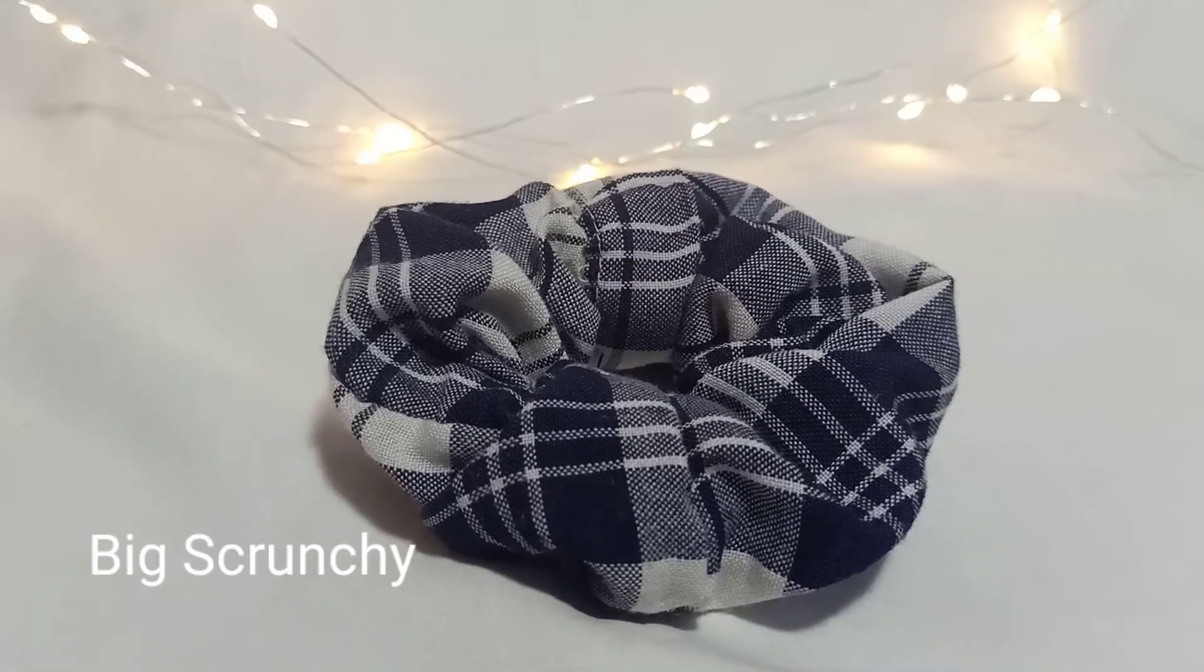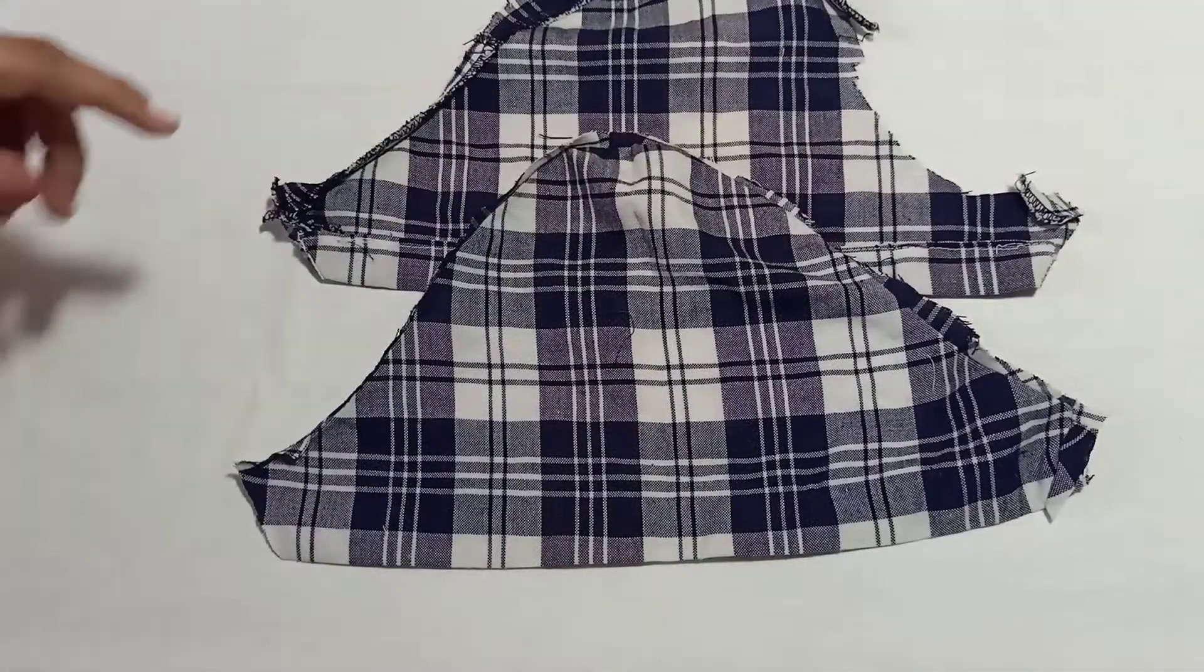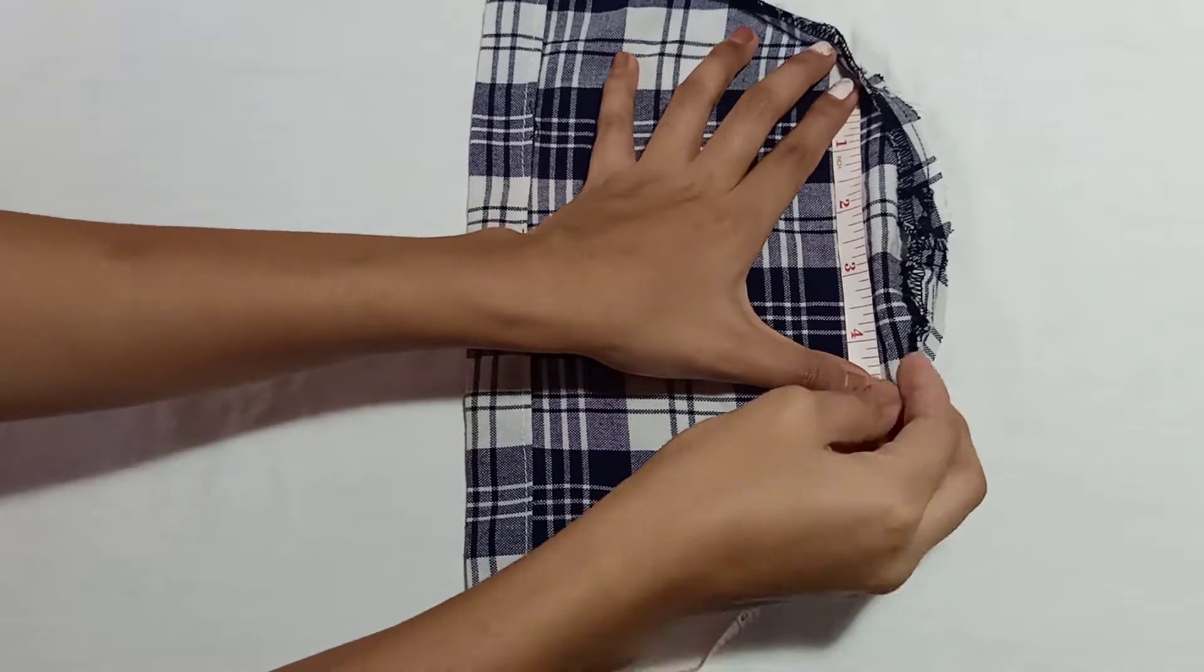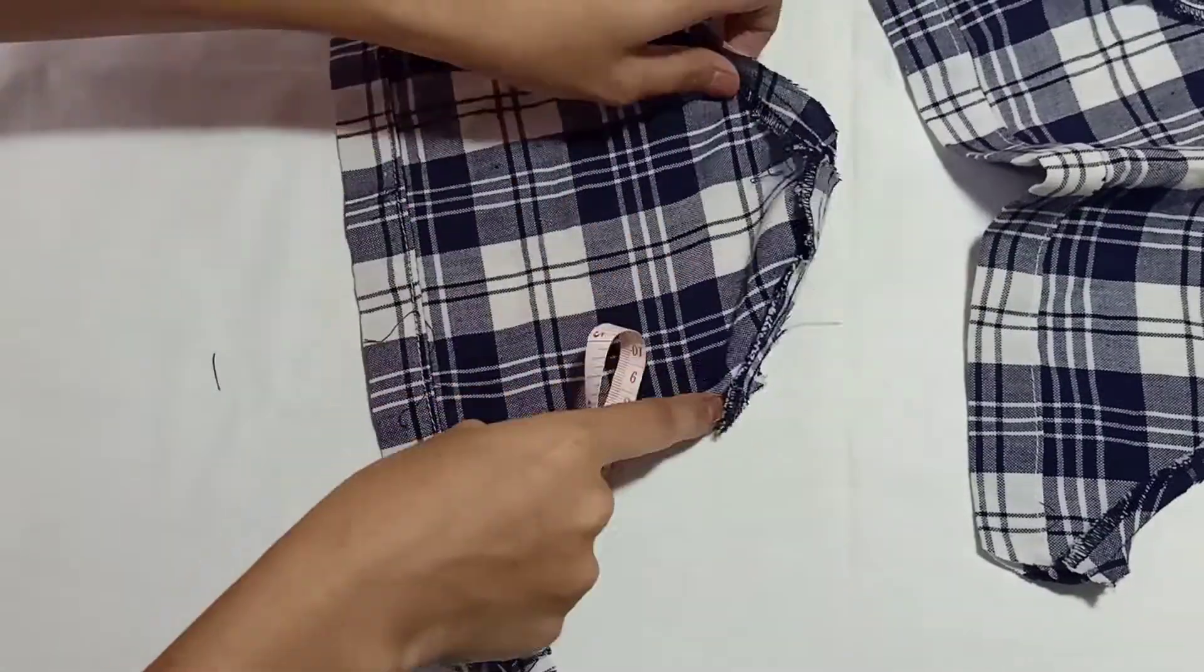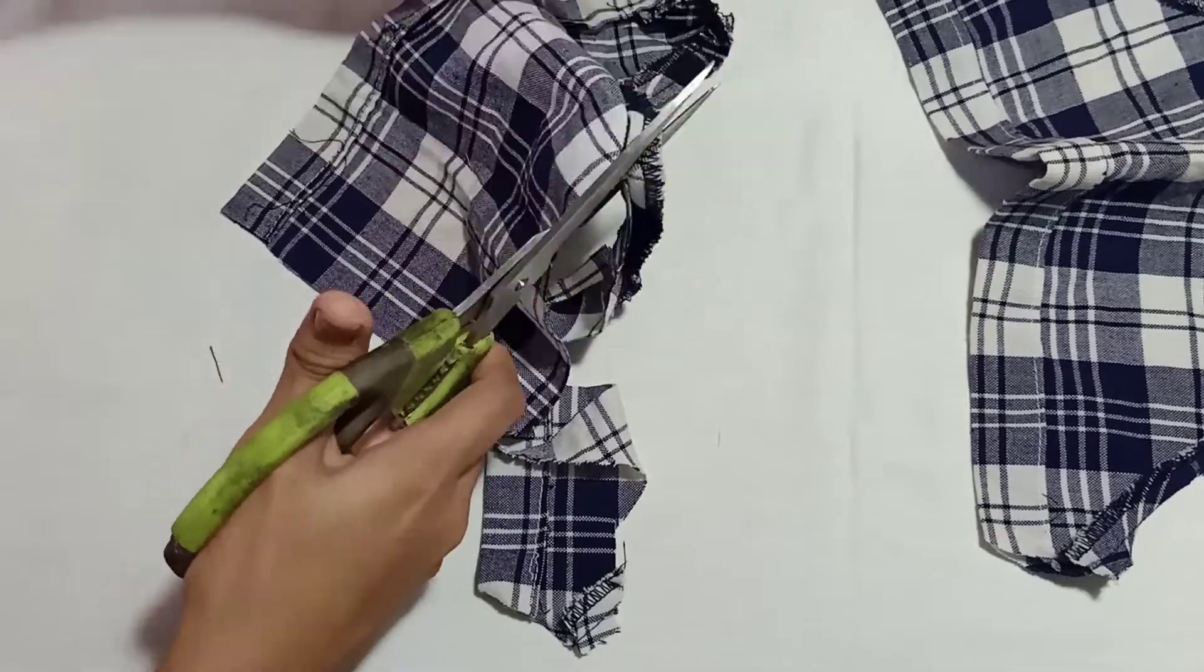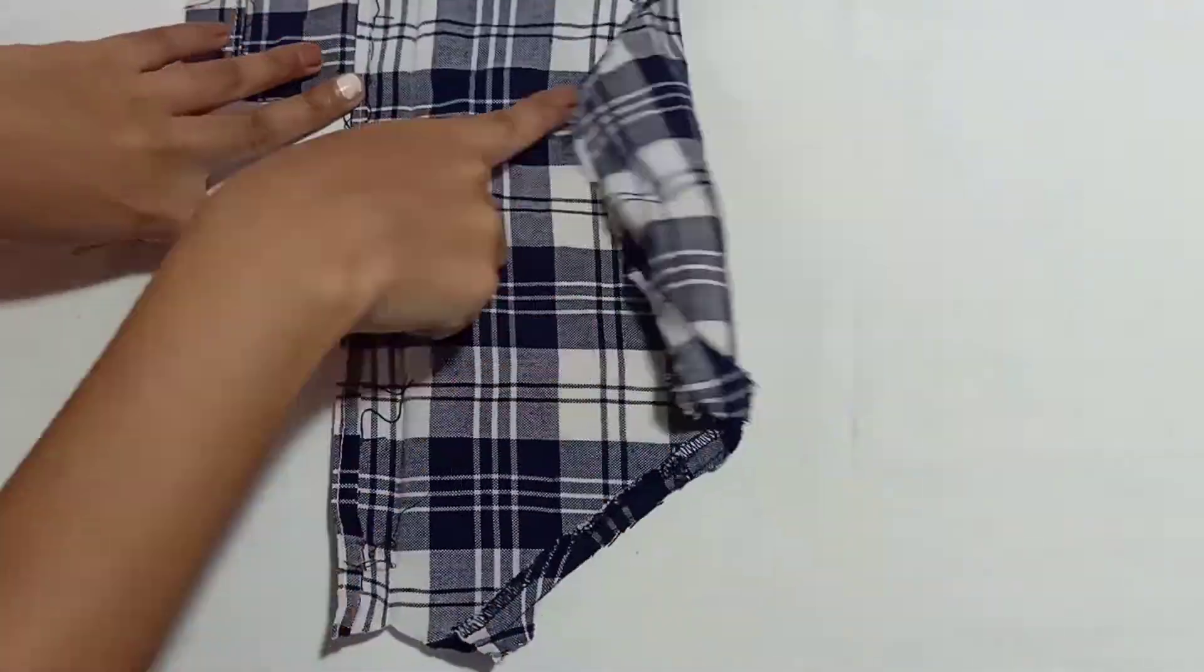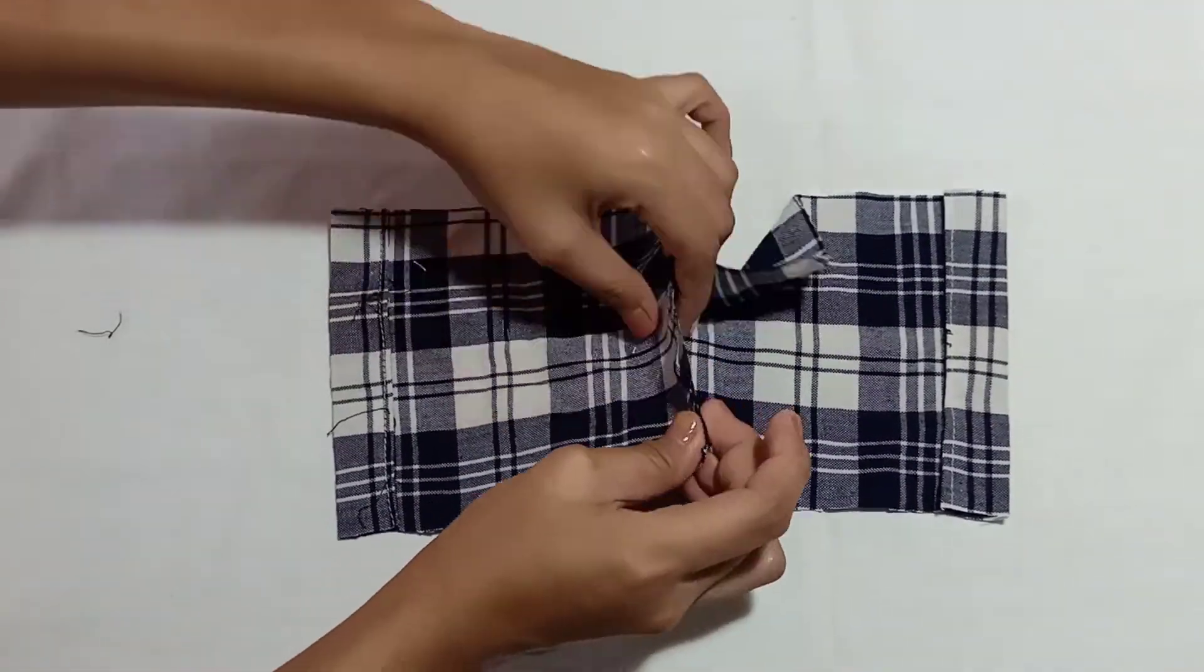The second one I'll show you is the big scrunchie. As you can see, it's leftover fabric from a sleeve that I removed. I measured 5 inches on both sleeves and cut them. Since this is the maximum length, I'll just find a way.